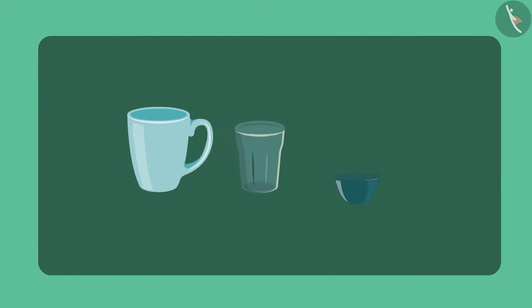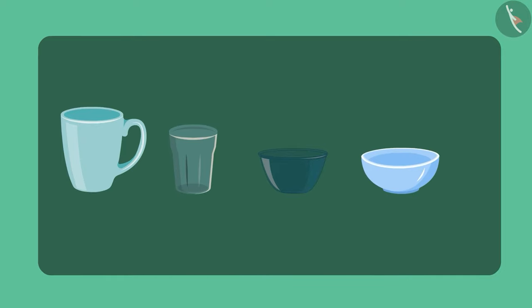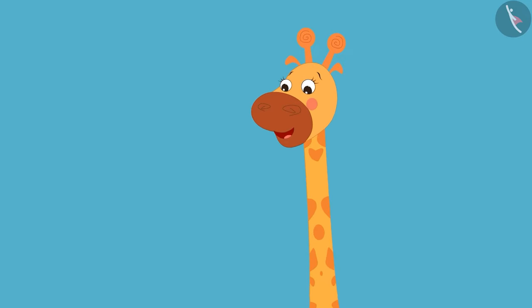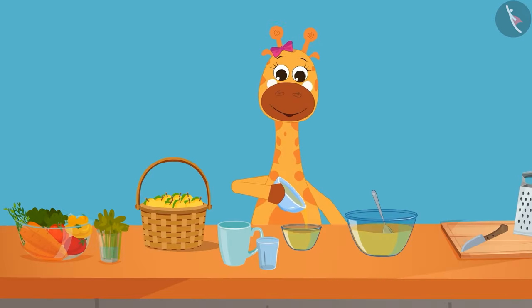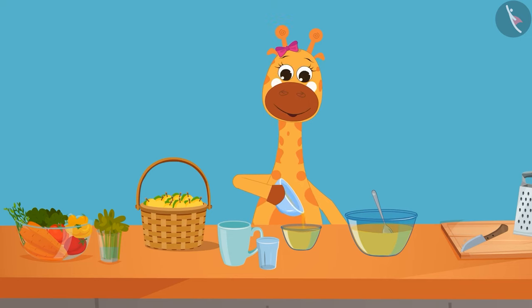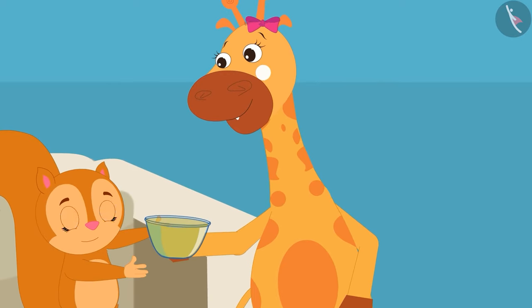Gaffee, these are all pots with different capacities. If you fill lemonade in all the pots from this bowl, then it will be easy to guess. Gaffee filled lemonade in a small bowl and gave it to Sunny.